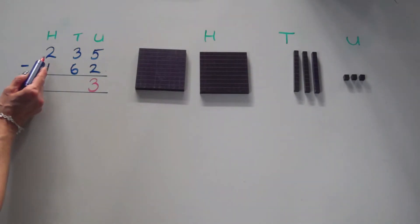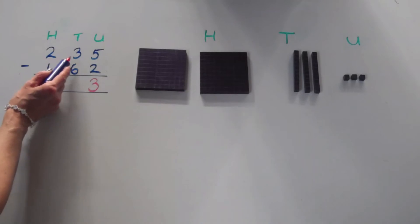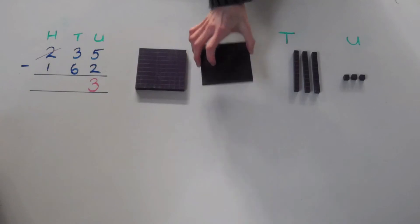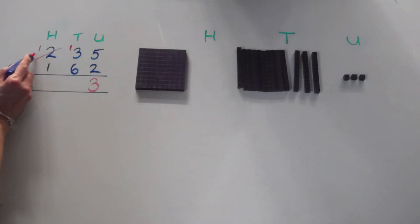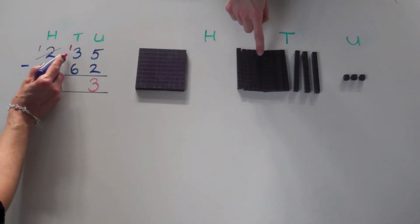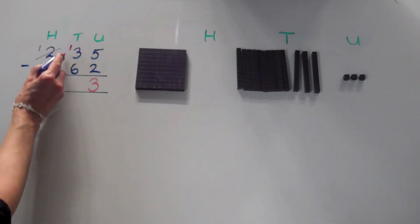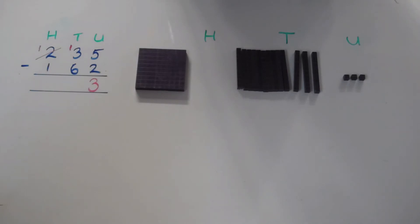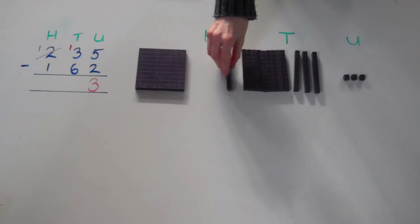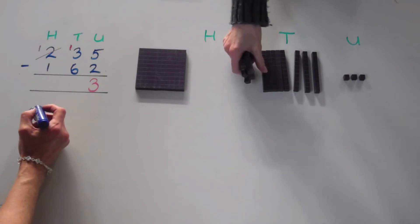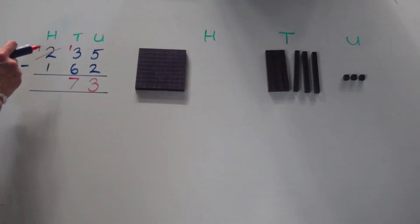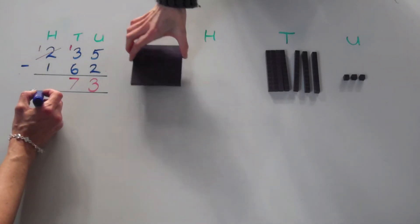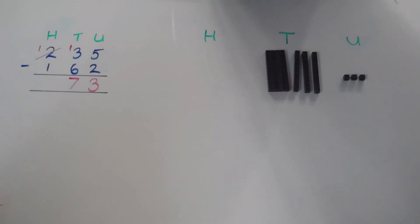We have lots of hundreds in our calculation. So looking at the tens column again, I am going to exchange one hundred for ten tens. I now have one less hundred in the hundreds column and ten more tens in the tens column, so my tens column looks like thirteen. I can now take six away from thirteen, and that leaves us with seven. In the hundreds column, I now have one hundred after the exchange and I need to take away one hundred — one hundred take away one hundred is zero. So my answer is seventy-three.